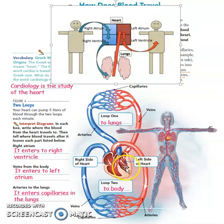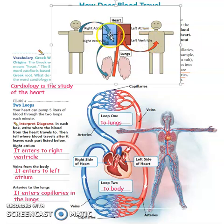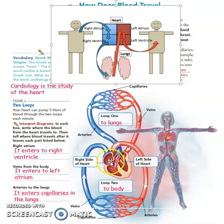This box represents the heart, which has four chambers: the right atrium, the left atrium, the right ventricle, and the left ventricle. The colors symbolize blood type — blue for deoxygenated blood and red for oxygenated blood. Starting the process: blood enters the right atrium, and next it enters the right ventricle.